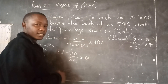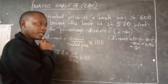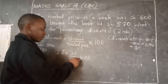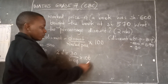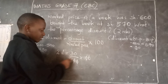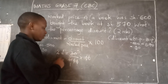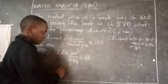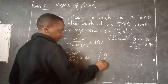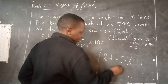Now let us divide: 30 divided by 600, multiplied by 100. The zeros cancel out, leaving 30 over 6. 30 divided by 6 equals 5. So the percentage discount is 5%.